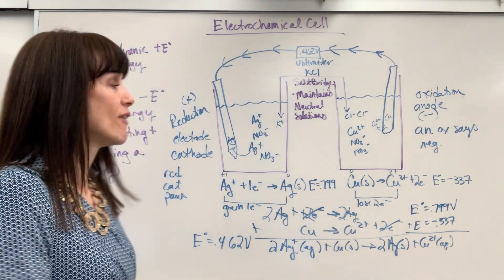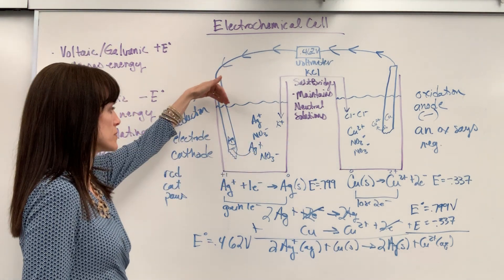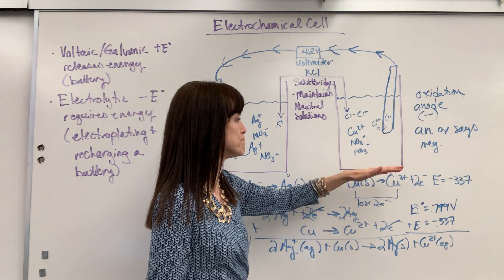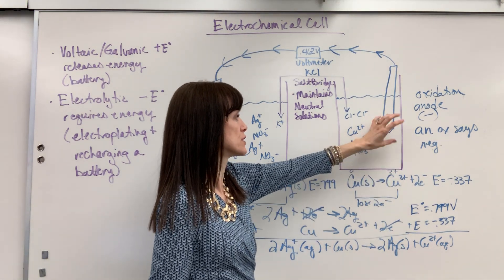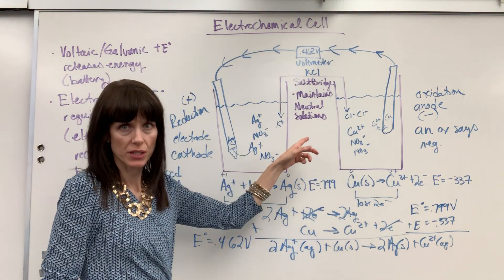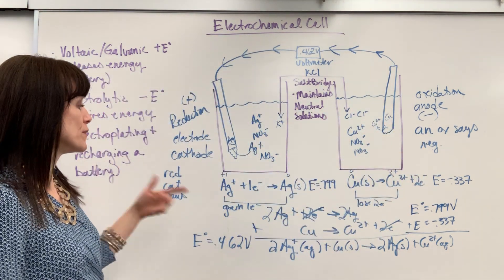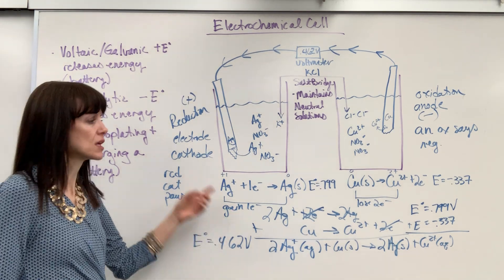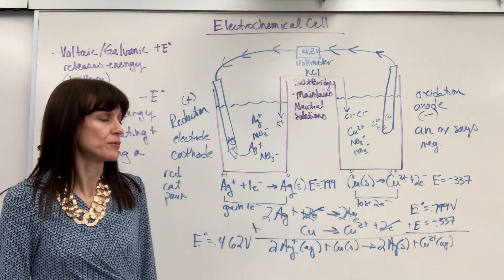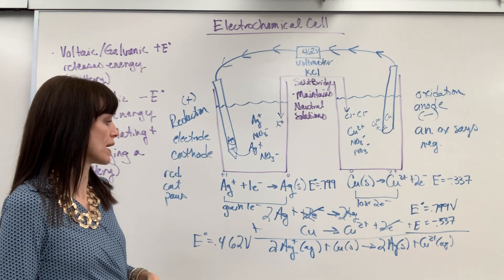Big overview of how an electrochemical cell works: gaining electrons — the reduced side is going to plate. Losing electrons — the oxidized side — the electrode is going to shrink because the solid becomes the ion. Watch the video on the salt bridge if you need that. Memorize these two sayings so you can label everything, and watch the videos on balancing half reactions and determining standard reduction potentials if you need that help.